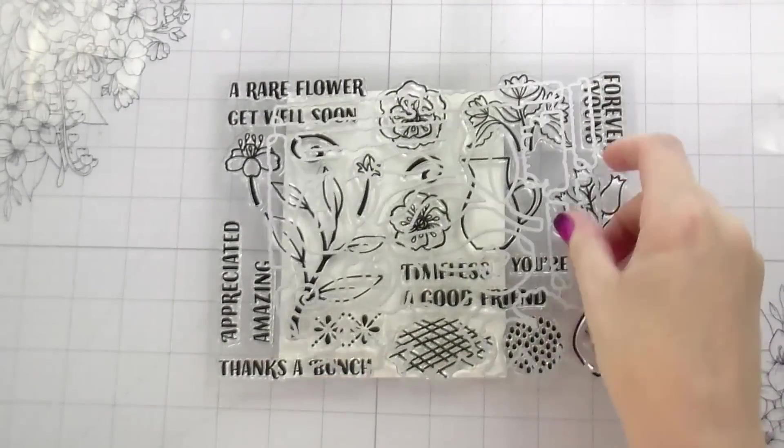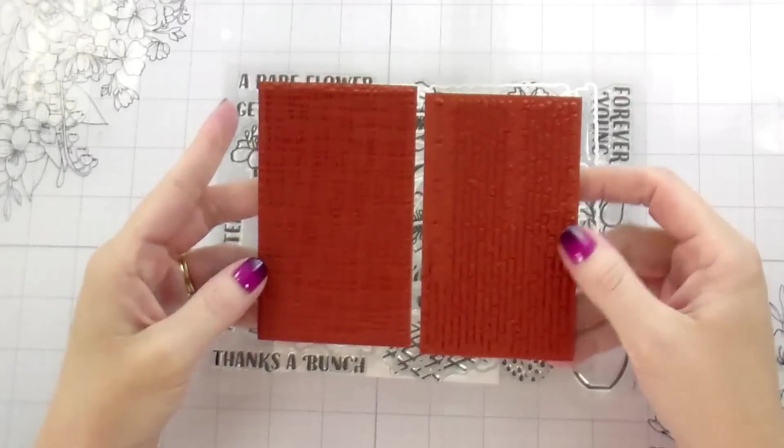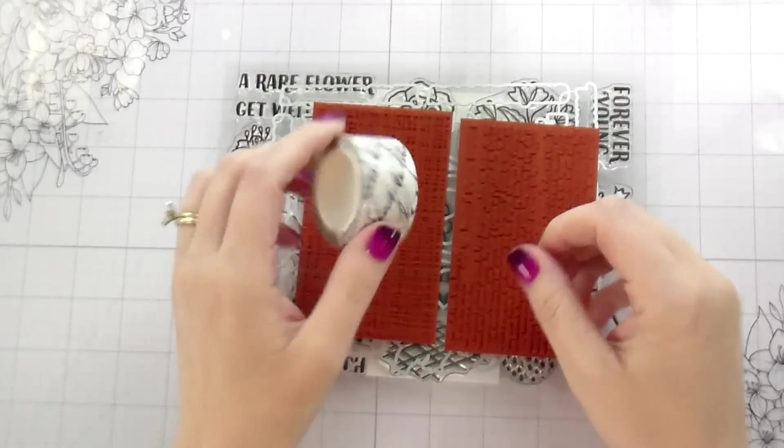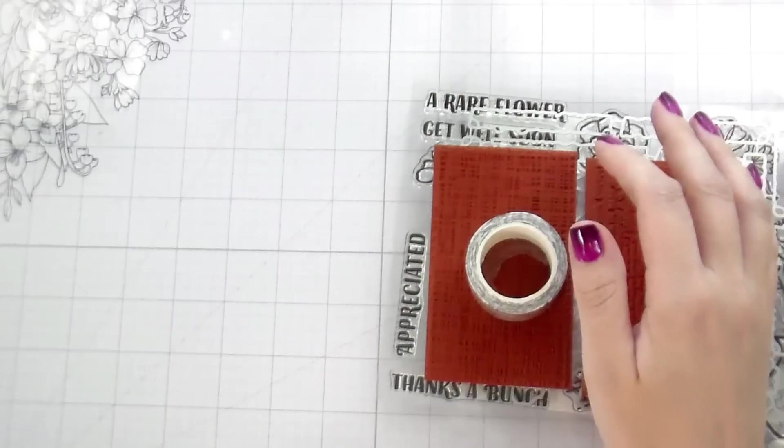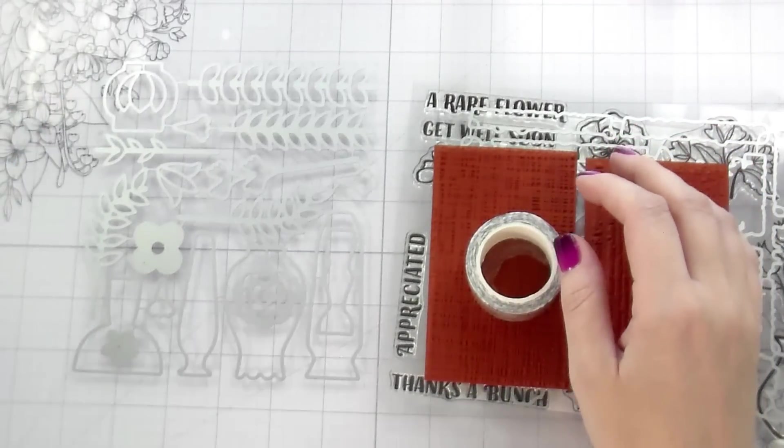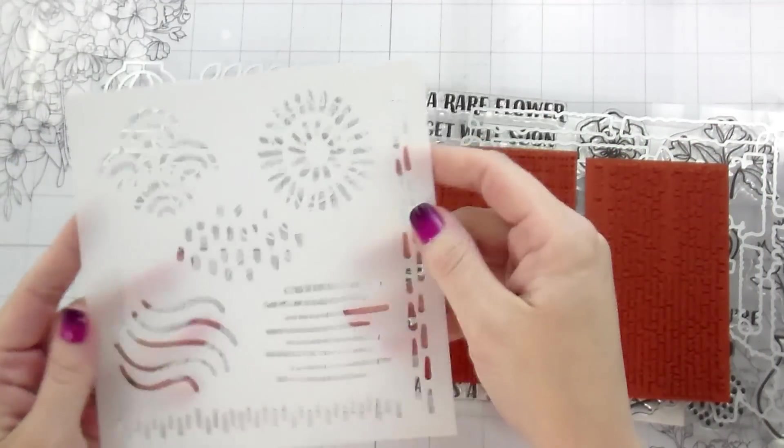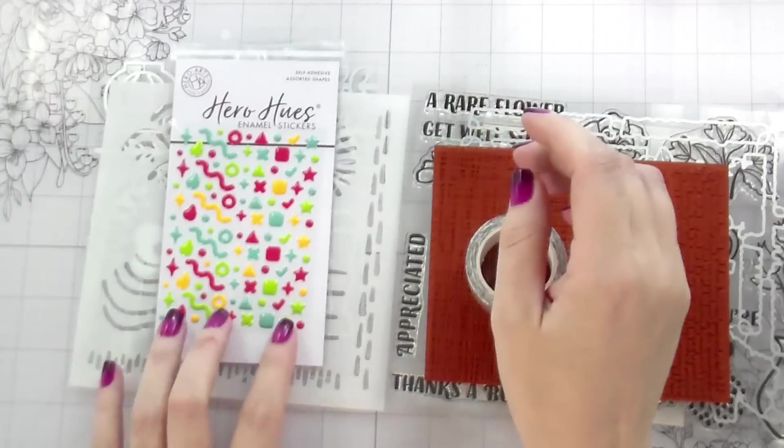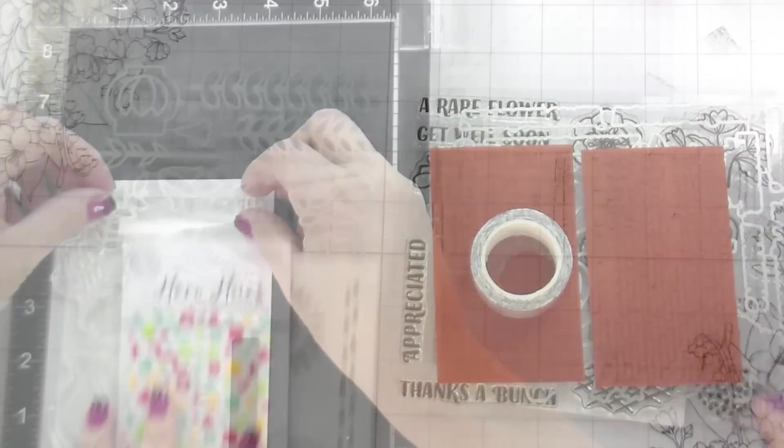For some of the cards, I did use the April My Monthly Hero kit, both the classic and the premium. This is what you get with the classic kit and then the premium kit includes also these dies, the stencil, and these cute little stickers.